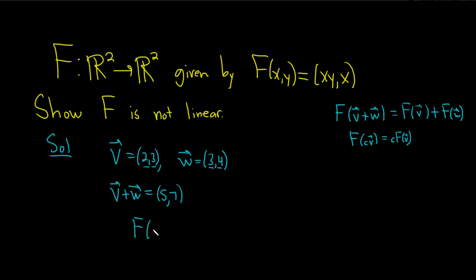So if we look at F of v plus w, that's really F of 5, 7. And so according to the definition, it's 5 times 7 and then 5. So that'll be 35, 5.